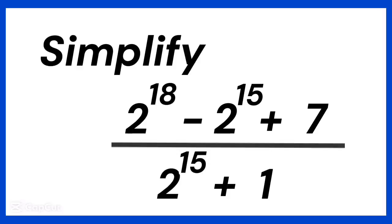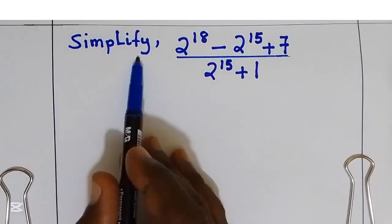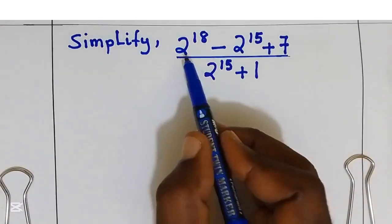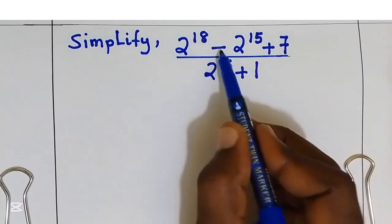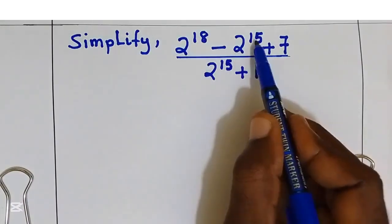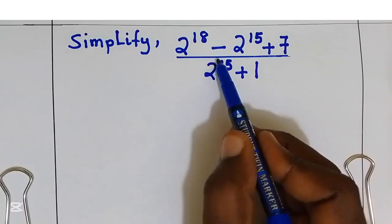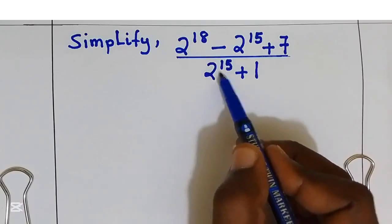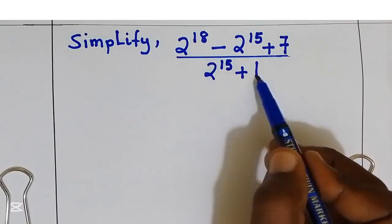Hello, welcome. My name is Walter. We have an exponent question. We need to simplify 2 power 18 minus 2 power 15 plus 7, over 2 power 15 plus 1.